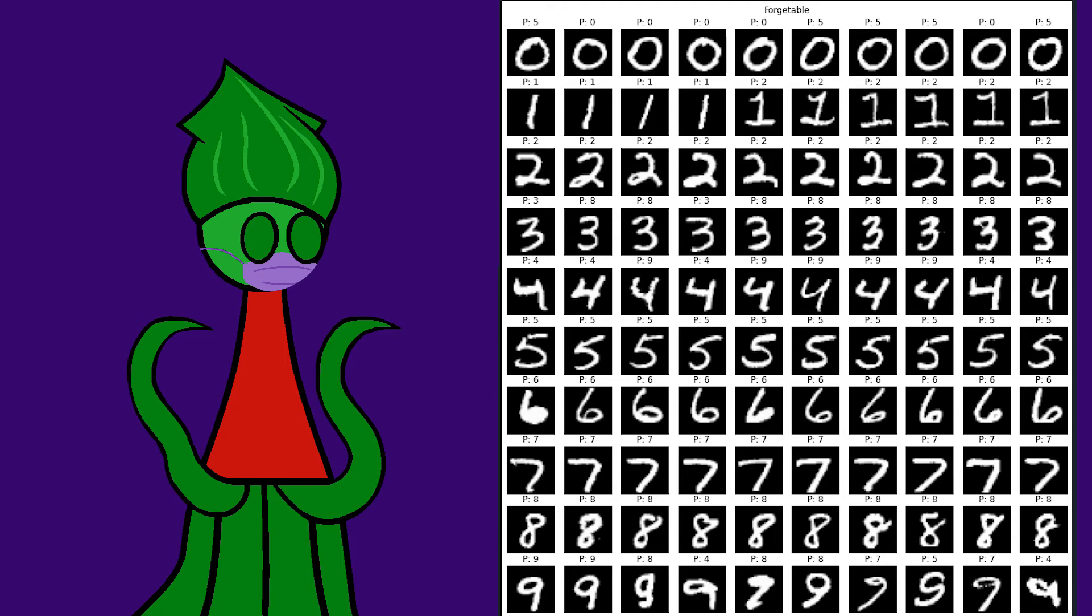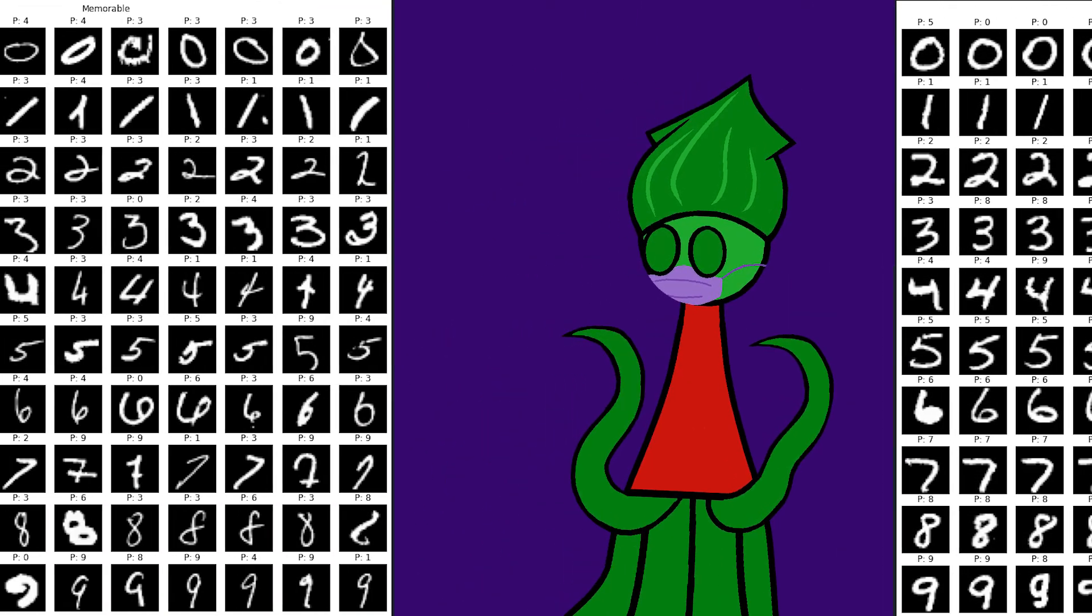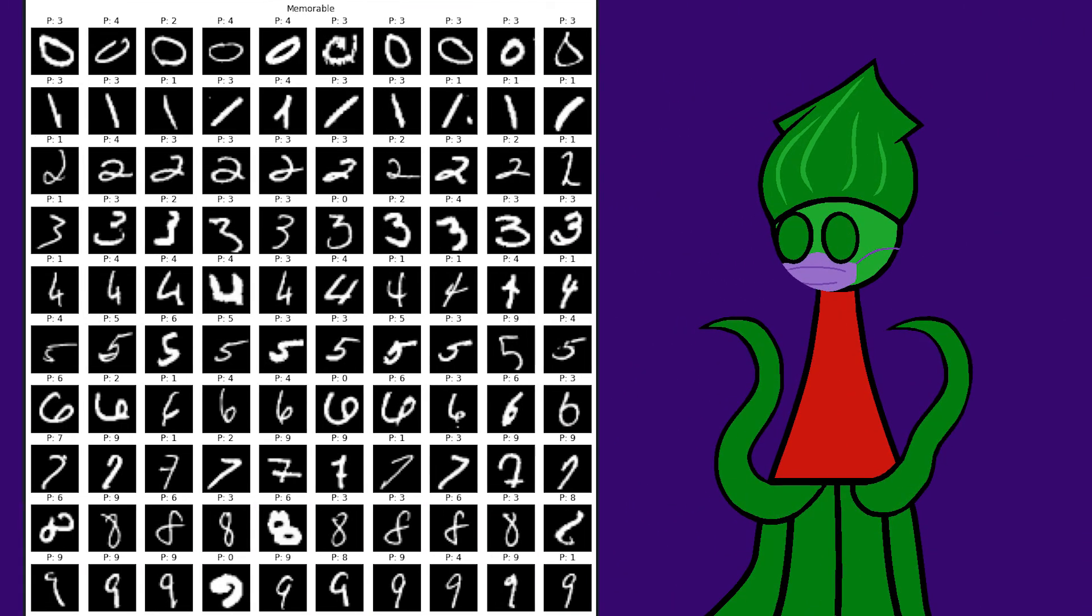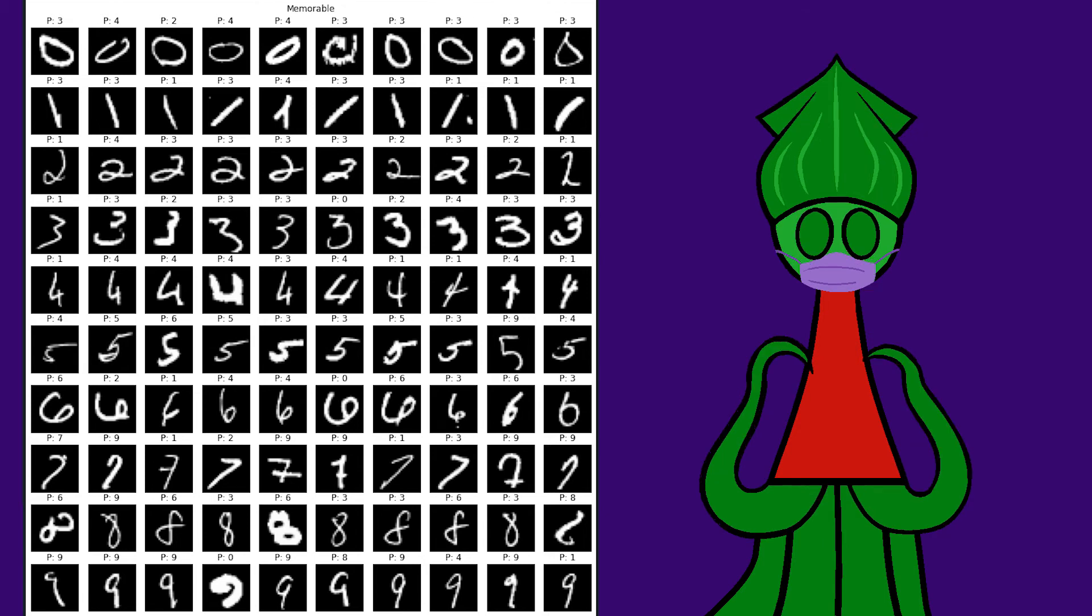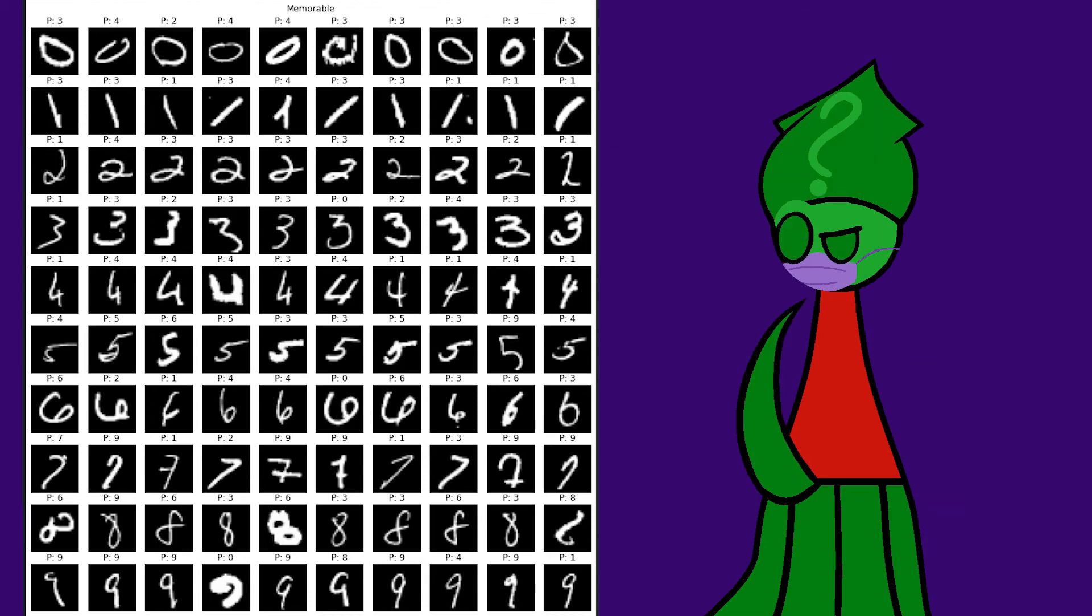The memorable digits? The classifier got most of them wrong. I can imagine making mistakes on some of these. There's bad handwriting out there. But why does it help to regularize the output when the output is wrong?